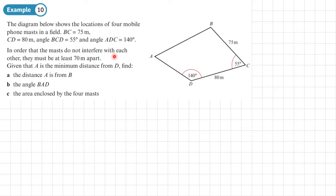In order that the masts do not interfere with each other, they must be at least 70 meters apart. Given that A is the minimum distance from D, that means that this is 70 meters there. So we can put that in.